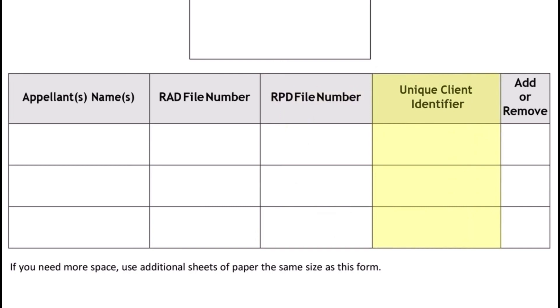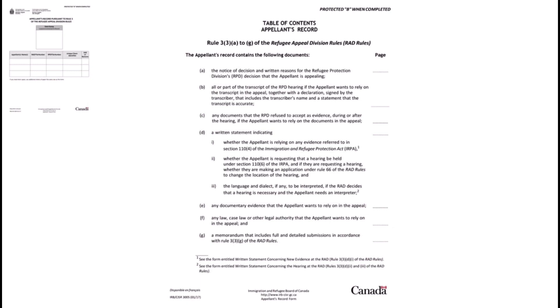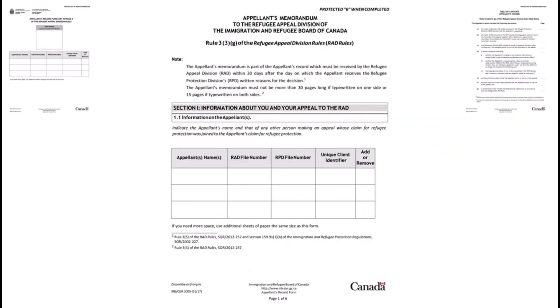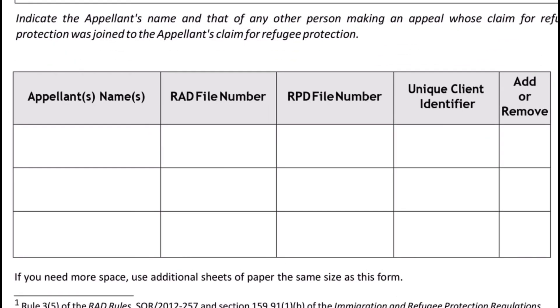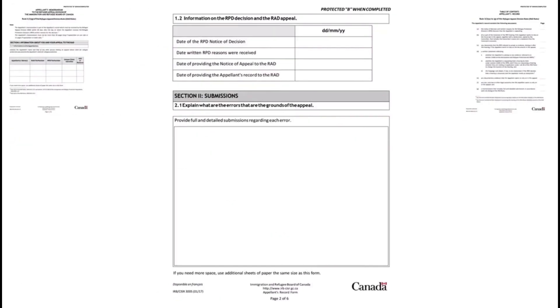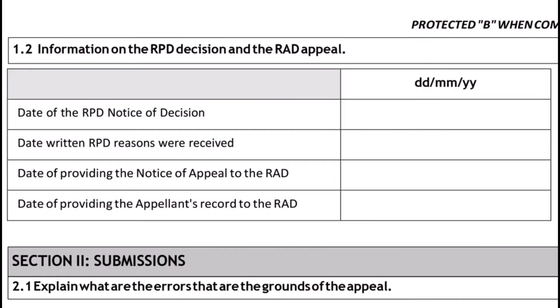The second page is the table of contents — don't worry about this for now, we will come back to it later. You will find the Appellant's Memorandum in section 1.1. Put in your information. In section 1.2, put in the following dates: the date when you received the RPD Notice of Decision, the date when you received the RPD Reasons and Decisions.